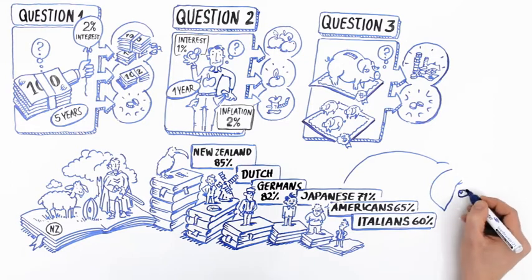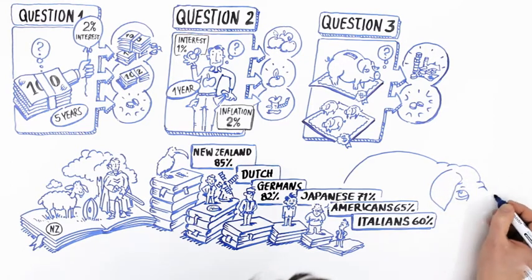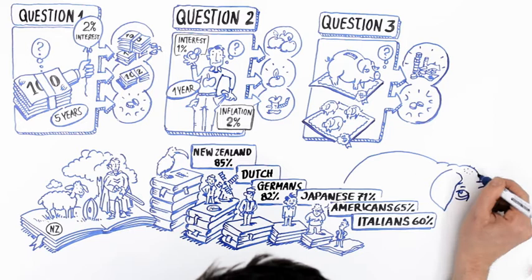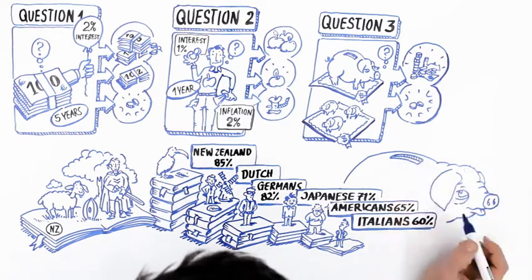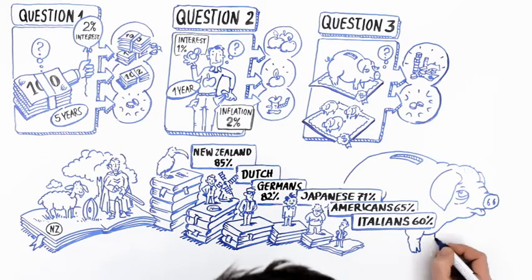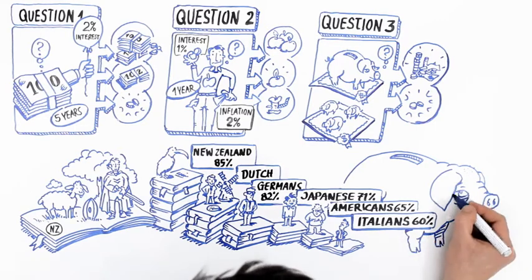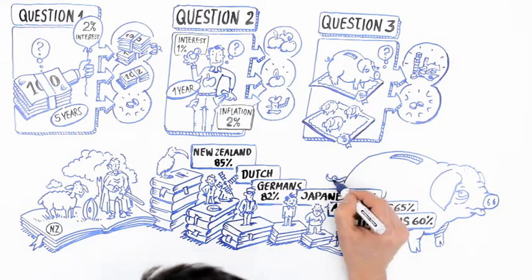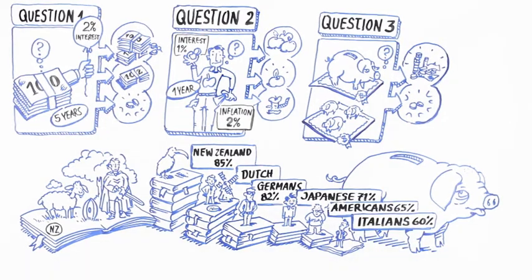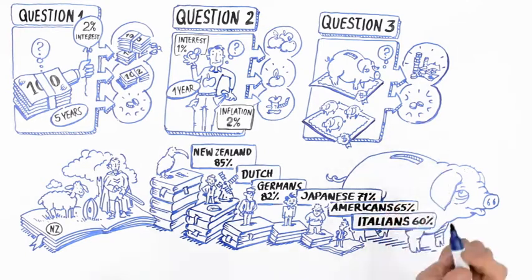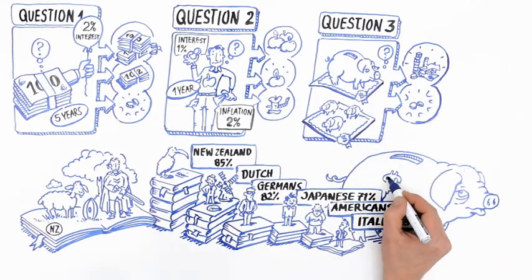This surprised me. I had expected that nations with highly touted school systems would have educated their population better, particularly in terms of financial concepts. However, most people do not understand the key concepts of compounding, risk diversification, and inflation.